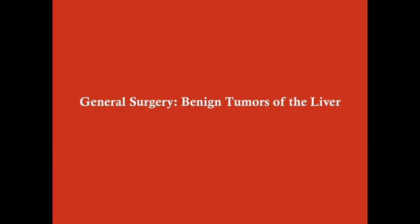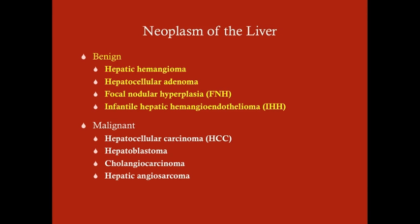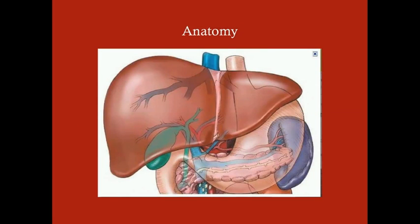We'll talk about some of the benign tumors of the liver. There are four that we're going to discuss: three which happen in adults and one which happens in the pediatric population, namely neonates and infants. We'll talk about hepatic hemangioma, which is the most common benign neoplasm of the liver, hepatocellular adenoma, focal nodular hyperplasia, and then infantile hepatic hemangioendothelioma, which happens in infants usually less than one month of age.